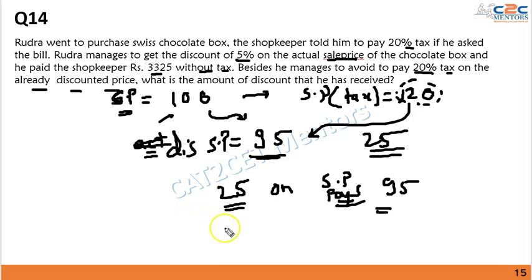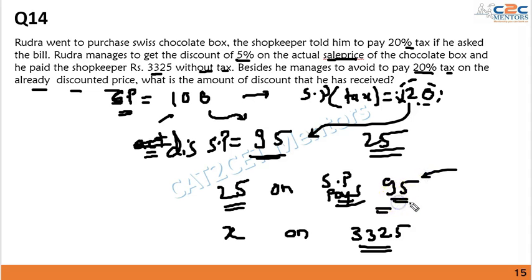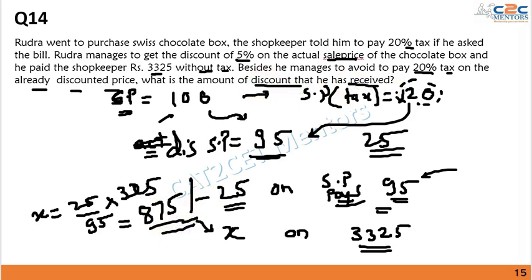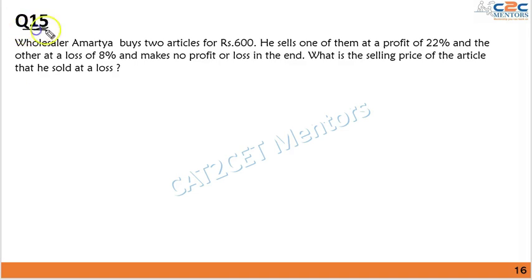Using the unitary method: let x be the discount when Rudra pays 3325 rupees. On a selling price of 95 rupees he gets a discount of 25 rupees. So x = (25/95) × 3325 = 875 rupees. The effective amount of discount that Rudra received is 875 rupees.